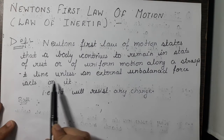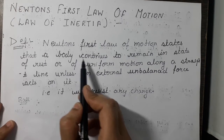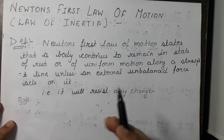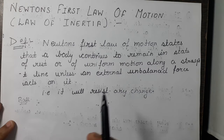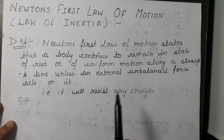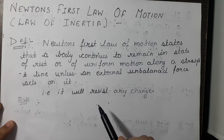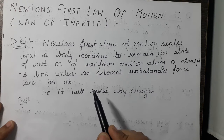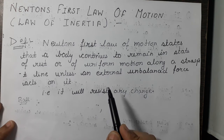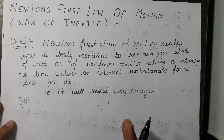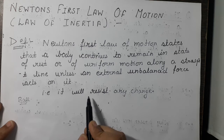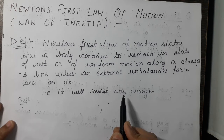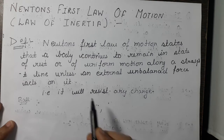That is, if a body is moving in a straight line it will continue to move in that direction unless we apply an external force on it. And if the body is at rest, it will continue to remain in that state unless we apply an external force — it will resist any change and try to remain in the same state.